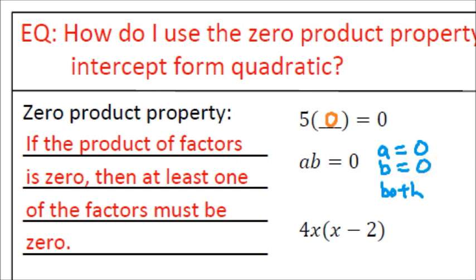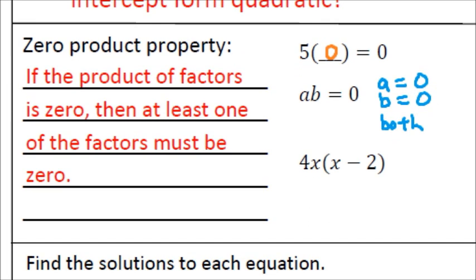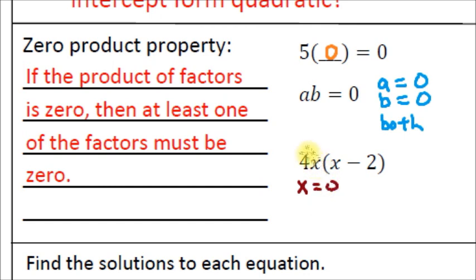Now let's look at this in terms of a more familiar expression. What if I gave you 4x times (x minus 2) and asked what values of x will change this expression to zero? You can use the same rules. If x is zero, then 4 times zero is zero, and zero times anything in the parentheses changes to zero. So by setting x to zero, the whole thing changes to zero.